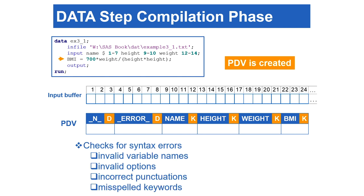During the compilation phase, SAS checks for syntax errors such as invalid variable names, options, punctuations, and misspelled keywords. SAS also identifies the type and length of newly created variables. At the end of the compilation phase, the descriptor portion of the SAS dataset is created, which includes the dataset name, the number of observations, and the number, names, and attributes of variables.